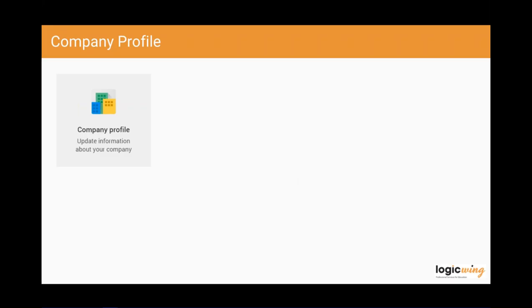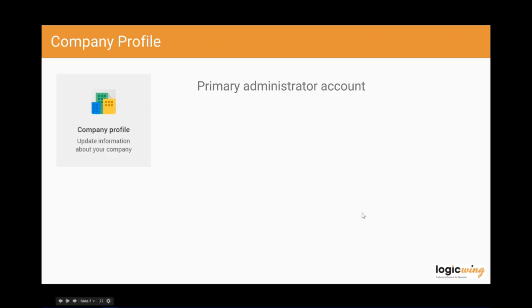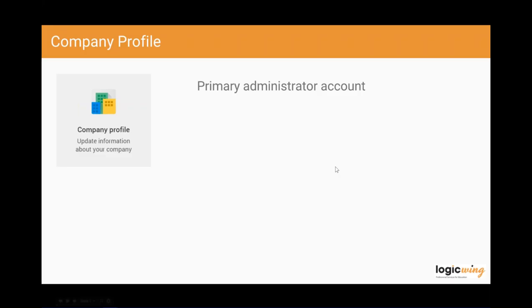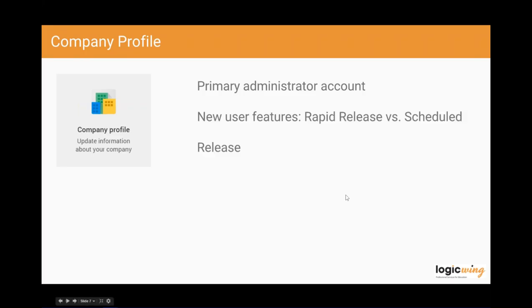I'm going to go through each of those tiles from the dashboard and give you a basic 10,000-foot view of what can be configured and why it's important. Starting with company profile — in your case, that's really a school or district. When you first sign up for Google Apps for Education, the first user you create during sign-up is a primary administrator. There is only one primary administrator, and that administrator has what's called super admin rights, meaning they can make changes to any setting within the Google Apps admin console.